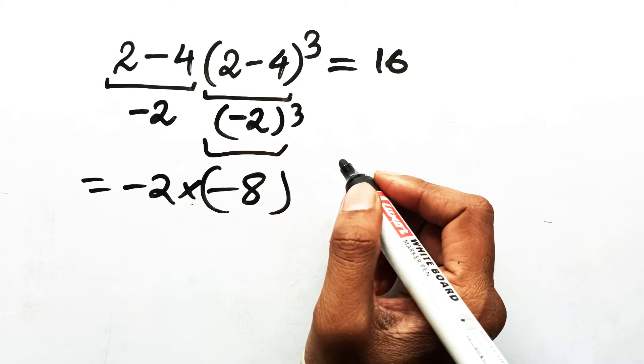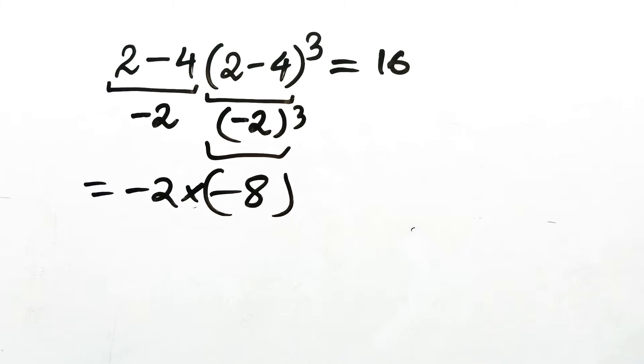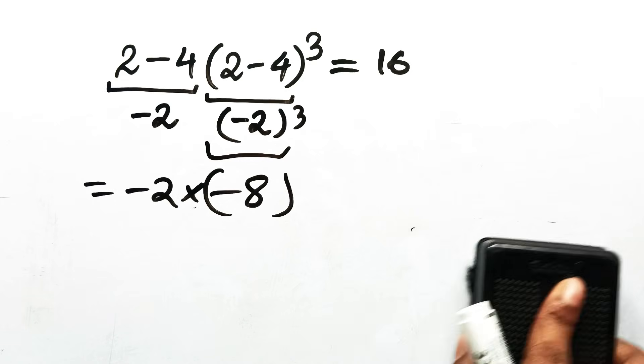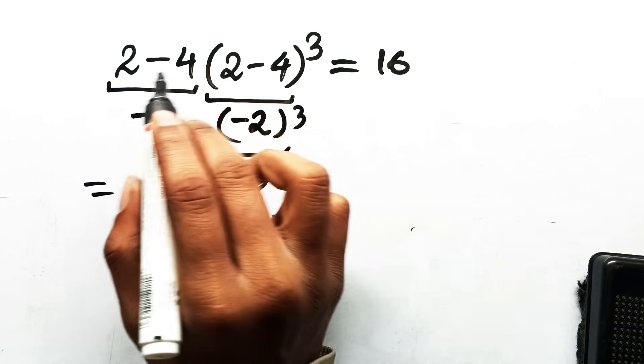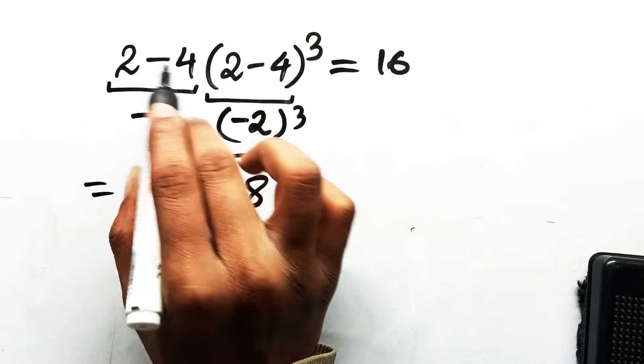But here's the quiet problem. That very first step already rewrote the expression. The math never gave you permission to subtract 2 minus 4 at the start. That subtraction is not grouped.